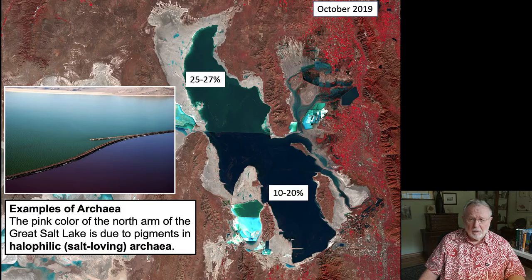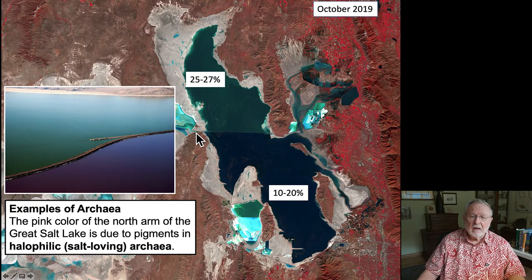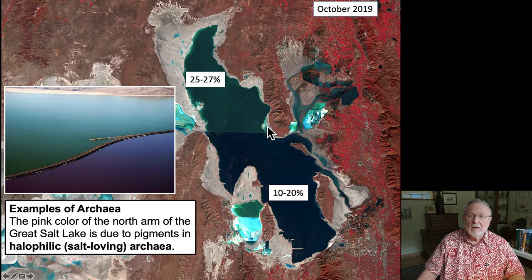You don't have to go far to see archaea — you can just go to the Great Salt Lake. As you know, the Great Salt Lake is divided in two by a causeway that goes across for railroad transportation. Most of the moisture into the Great Salt Lake comes in to the south arm, not into the north arm, and as a consequence the north arm has much higher salt concentrations than does the south.